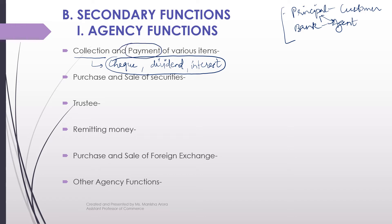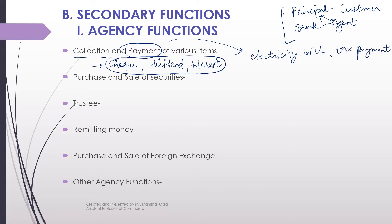On your behalf, the bank also makes certain payments. For example, your electricity bill — you can instruct the bank to deposit your electricity bill every month, and it will be done. If you have to make a tax payment, you can tell your bank and the bank will do it. If you have to pay an insurance premium, you can give standing instructions to your bank. So these are payments the bank can make on your behalf as your agent. This is the first agency function: collection and payment of various items.